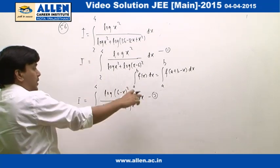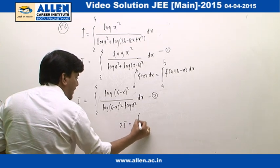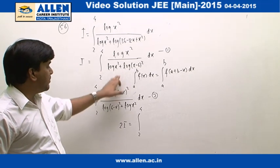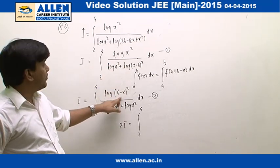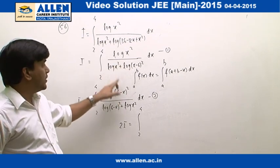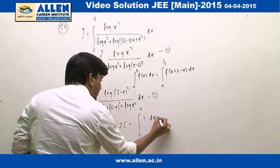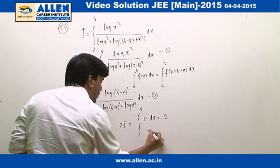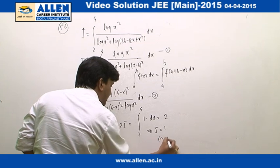Now we will add the two equations to get i plus i, that is 2i. On the right hand side this is 2 to 4, and when we add the two integrands, the LCM is same and the numerator is log x square plus log(6 - x) whole square, which is the same as denominator, so this becomes 1 times dx. This is going to be 2, and from here we can see i is 1, hence the correct answer is 1.